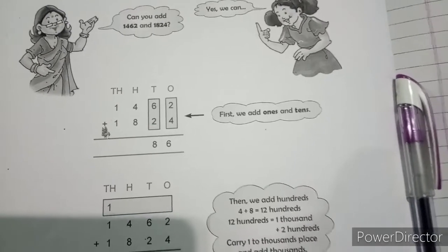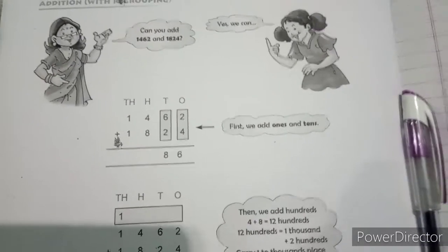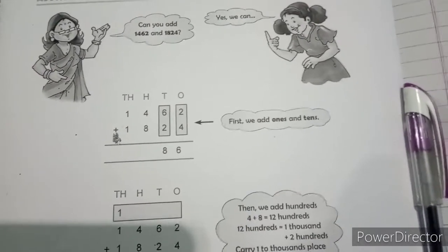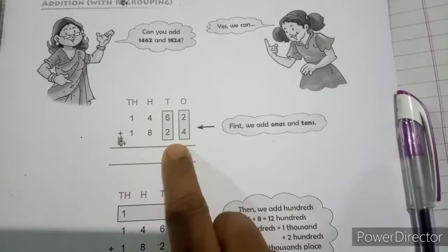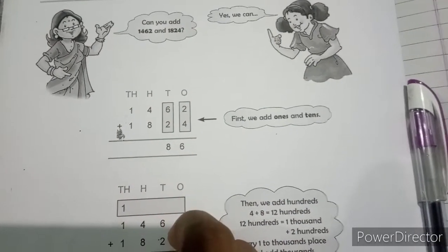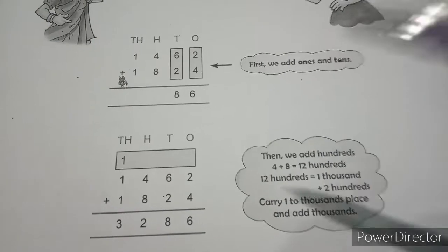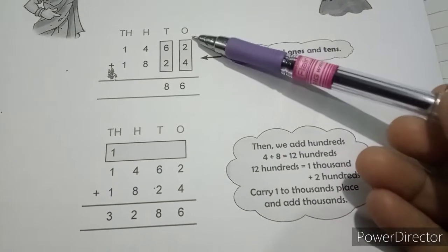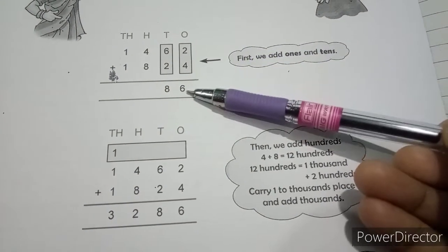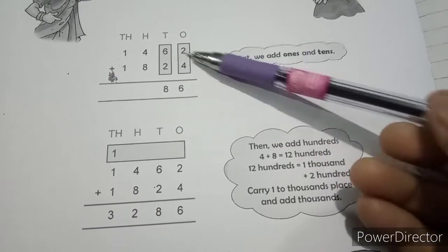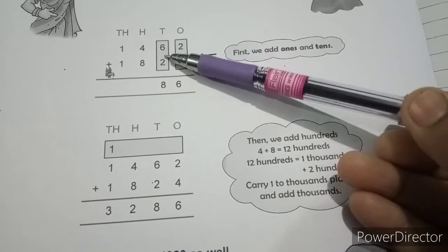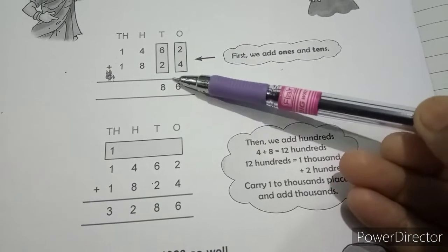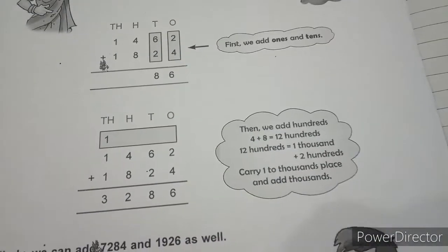First we add ones and tens. When we add ones, 2 plus 4 is 6, then 6 plus 2 is 8. Here when we are adding ones, the digit at ones place we are getting single digit. And again when we are adding the digits at tens place, we get single digit number.